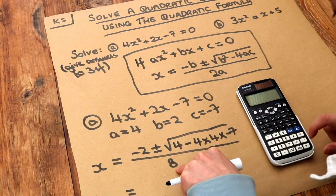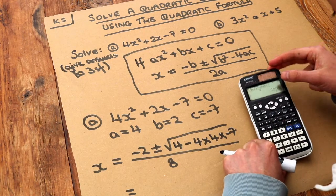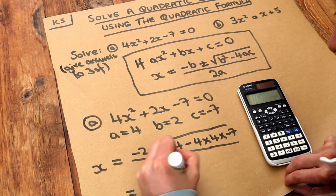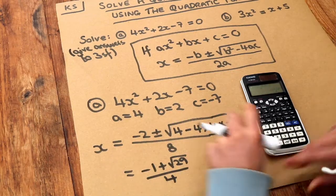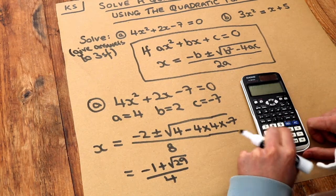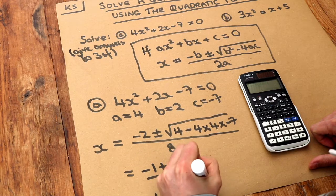Press the down key to get to the denominator, put the 8 there, and it gives you minus 1 plus root 29 over 4. And if we press the SD key we get 1.102 to three significant figures.